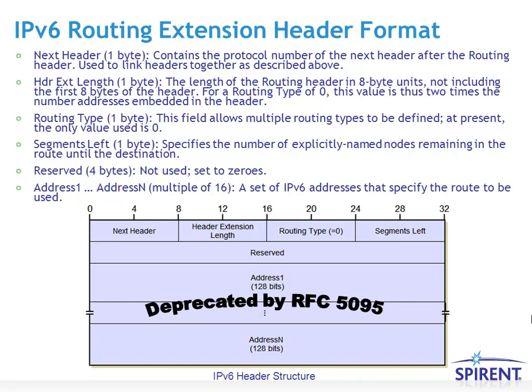This gives an example of the IPv6 routing extension header, although this particular extension header has been deprecated by RFC 5095, so it won't be discussed any further here.